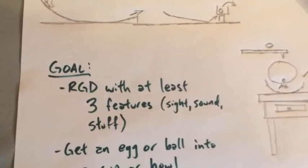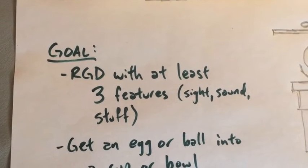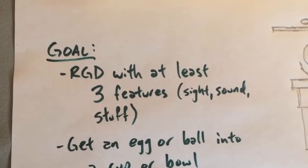Here's your goal. Your goal is to make a Rube Goldberg machine with at least three features. Well, what's a feature? It does something.